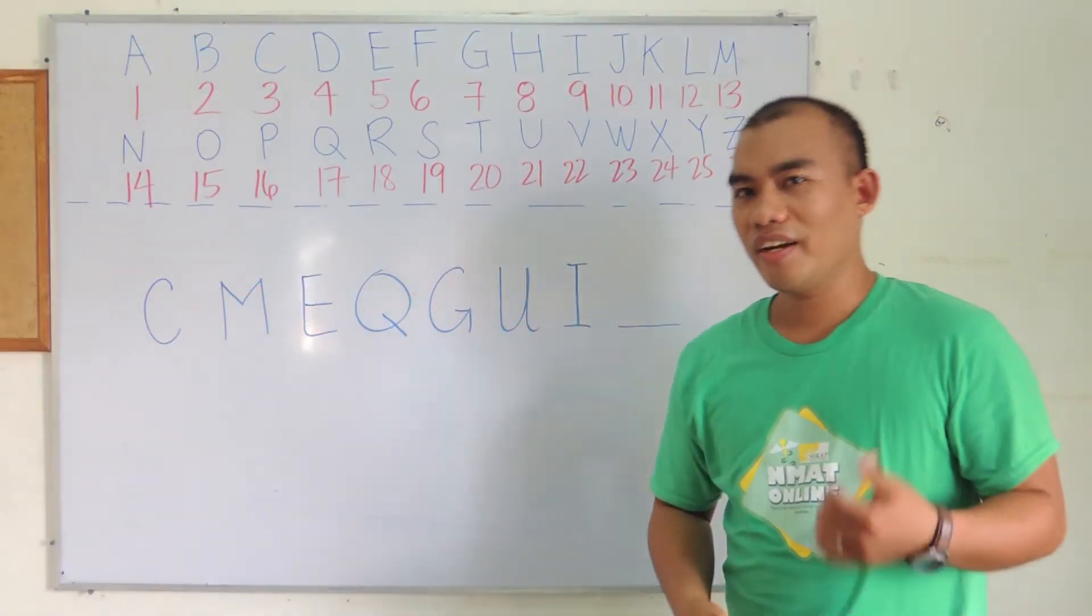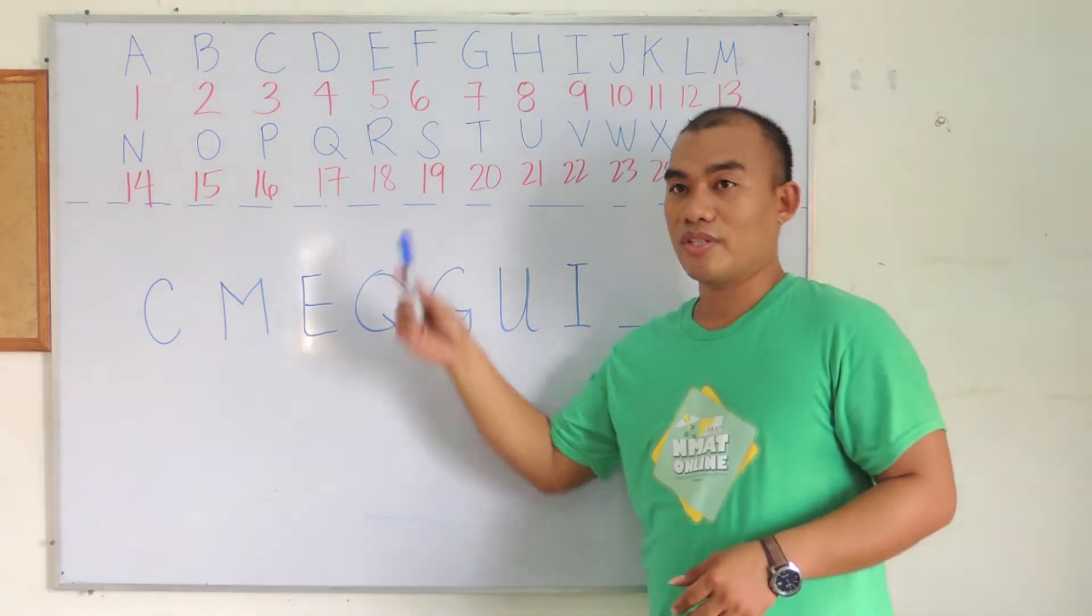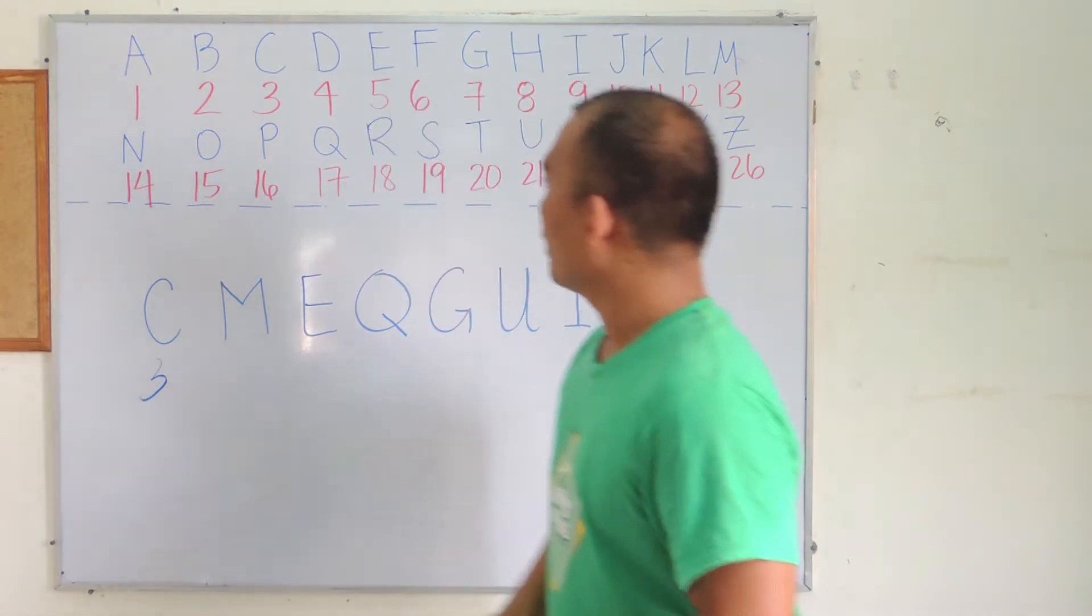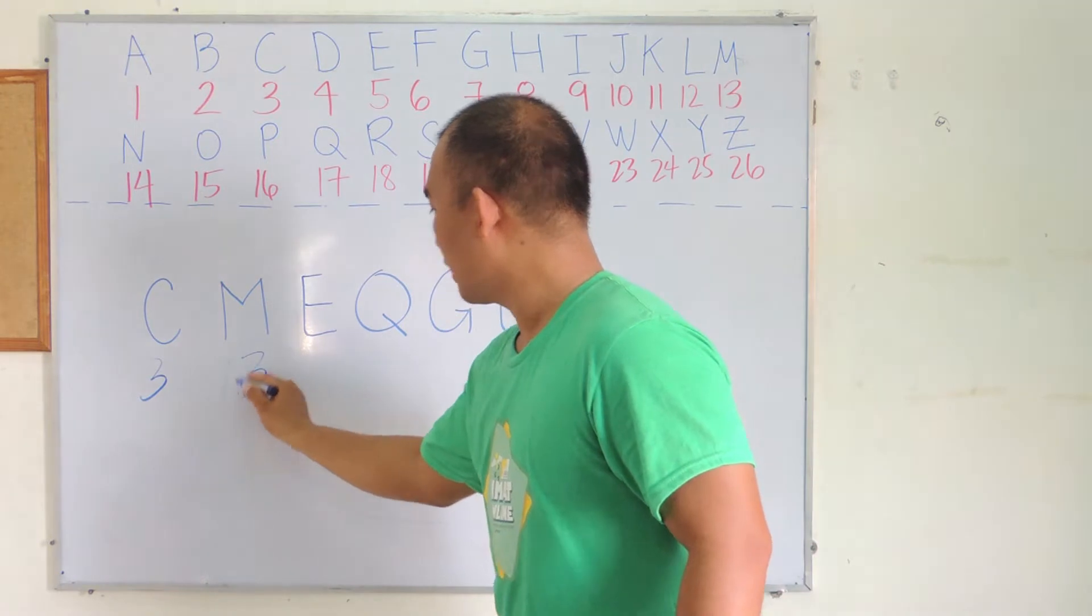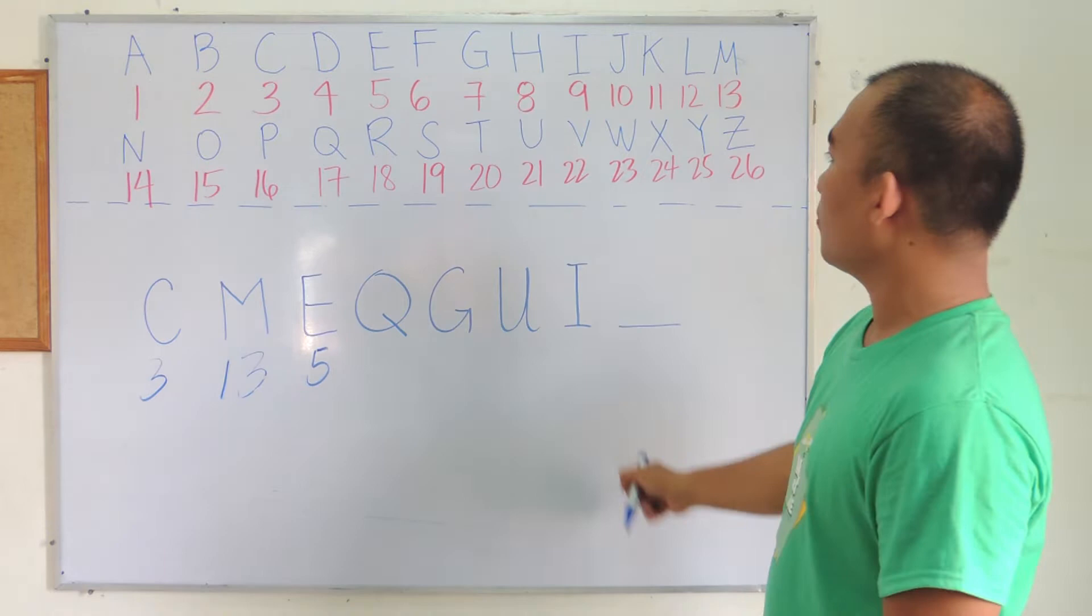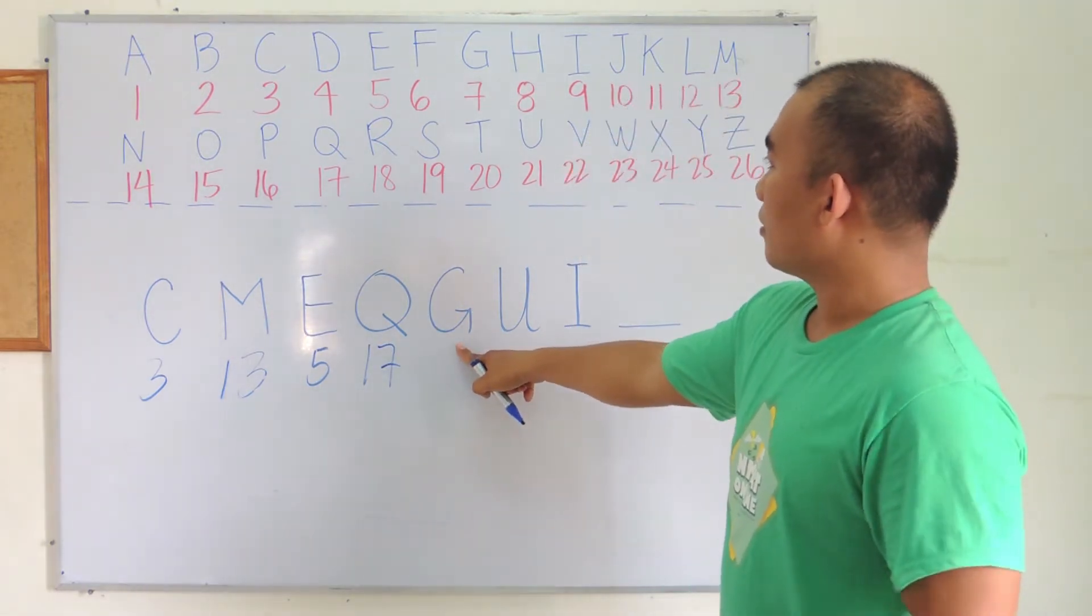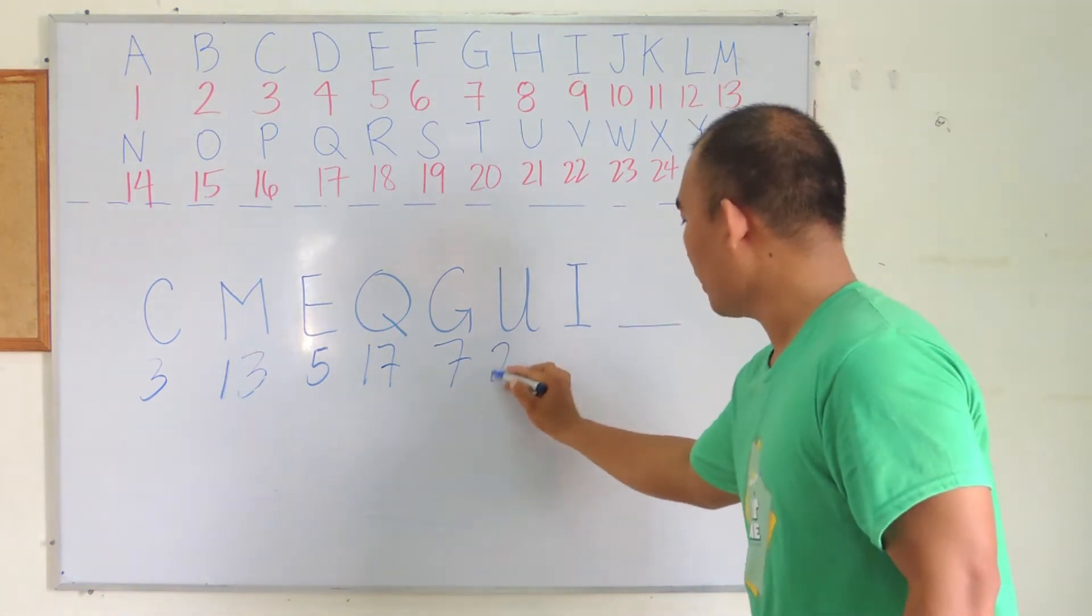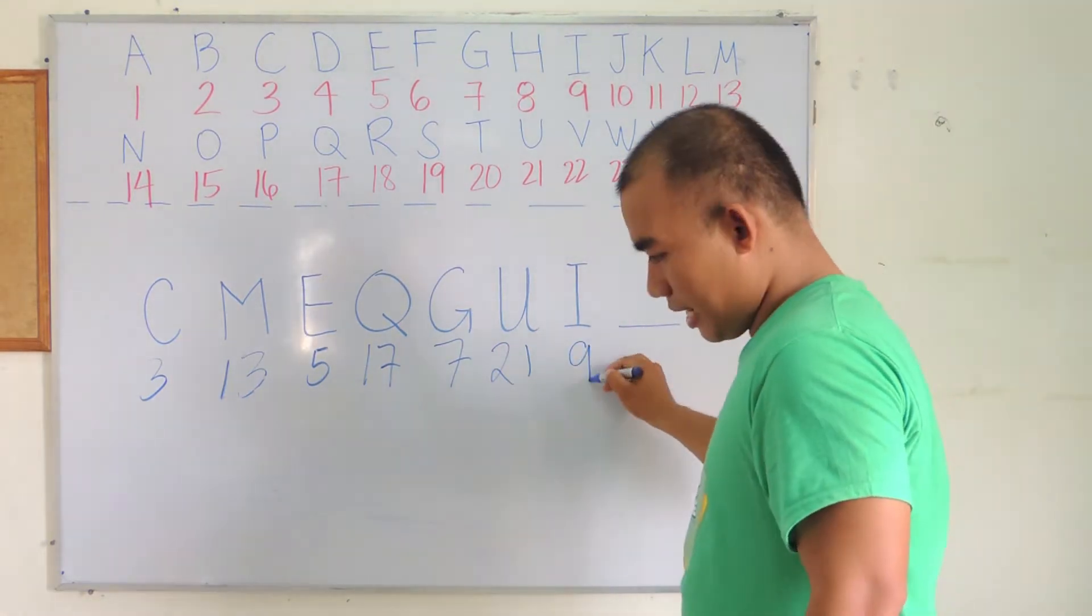So we have here another example for a letter series. The strategy is to convert these letters into numbers. We have C is 3, M is 13, E is 5, Q is 17, G is 7, U is 21, and I is 9.